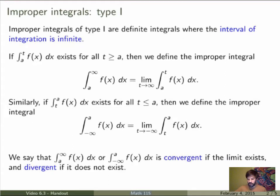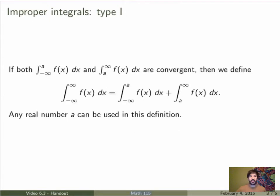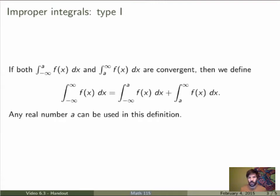We can also define improper integrals where both limits of integration run to infinity. If on both sides the integral is convergent, we define the integral from minus infinity to infinity as just the sum of the two. Any real number a can be used to split it — the left-hand side will be the same regardless.